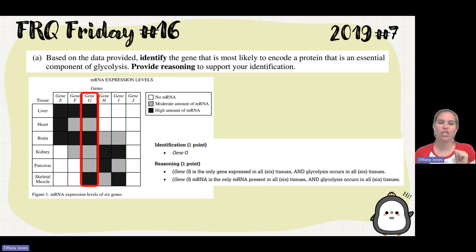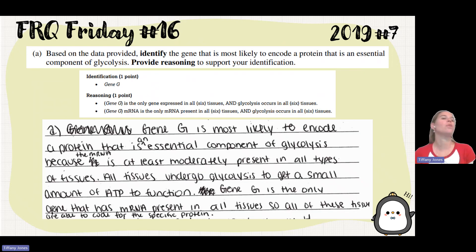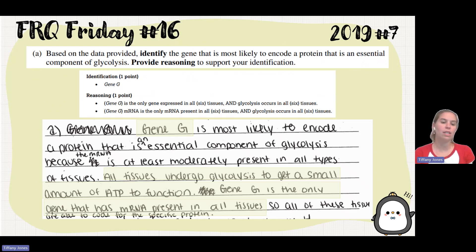Identification: Gene G. Reasoning: Gene G is the only gene expressed in all tissues, and glycolysis occurs in all tissues. Gene G is most likely to encode a protein that is a central component of glycolysis because the mRNA is at least moderately present in all cells and tissues. All tissues undergo glycolysis to get a small amount of ATP to function.